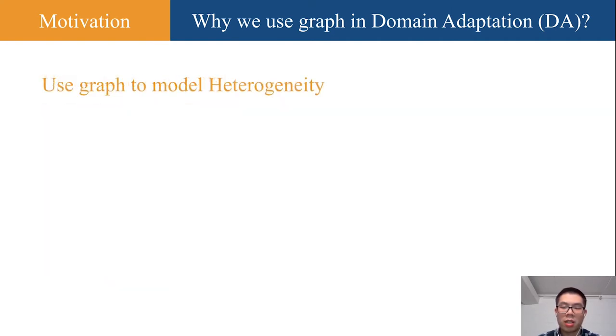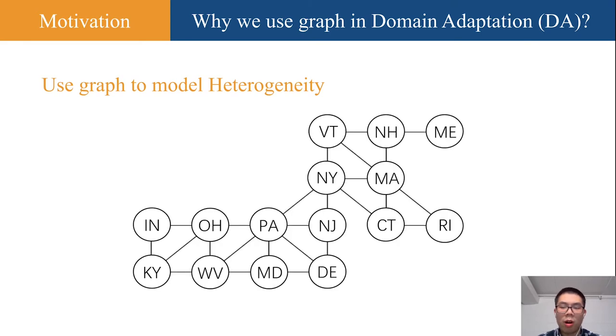Such heterogeneity can often be captured by a graph. In the example of weather prediction, we can treat each state as a node, and the physical proximity between two states results in an edge, just as shown here.